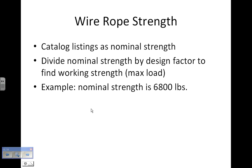Catalog listings show the nominal strength. You divide the nominal strength by the design factor to find the working strength — that is, the maximum load you can put on it. For example, with a nominal strength of 6,800 pounds and a typical design factor of 5, you divide 6,800 by 5 to get 1,360 pounds as the maximum working load.